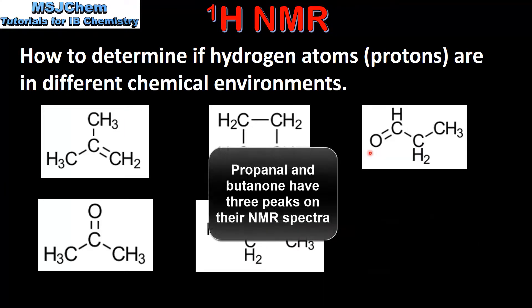Our next example is propanol. In propanol we have one carbon atom bonded to one hydrogen atom, another carbon bonded to two hydrogen atoms, and another carbon bonded to three hydrogen atoms. Because we have different numbers of hydrogen atoms bonded to the carbon atoms, that means we have three different chemical environments in which hydrogen atoms are located.